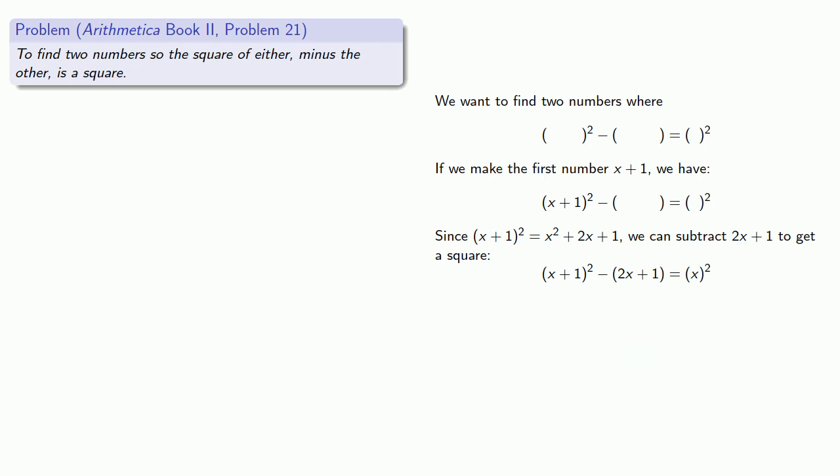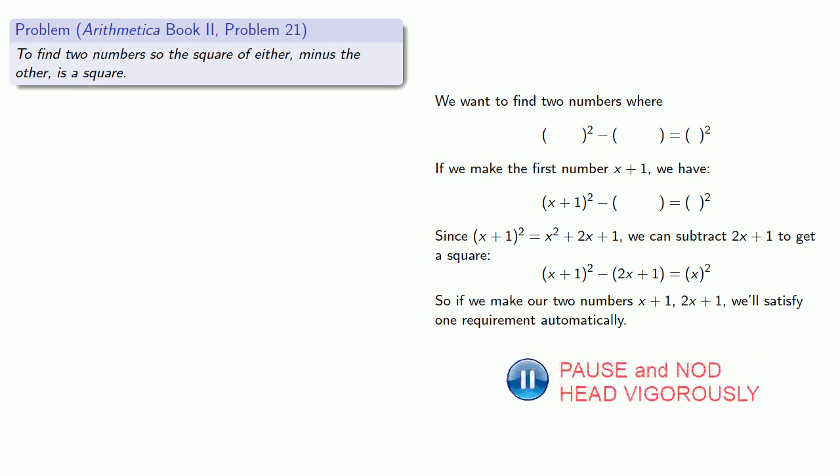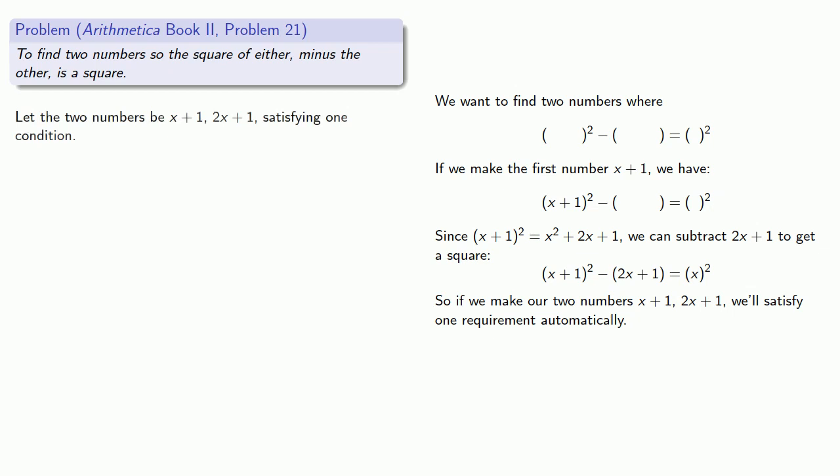What this means is that if we make our two numbers x plus one, our first number, and 2x plus one, our second number, we'll satisfy one of these requirements automatically. So Diophantus begins his solution by saying let the two numbers be x plus one and 2x plus one, satisfying one condition.